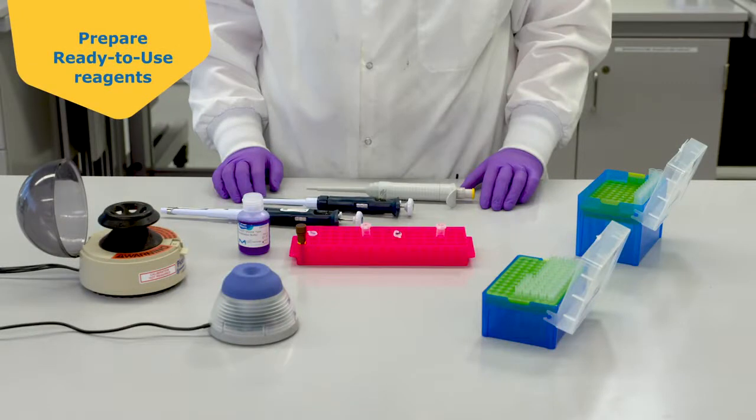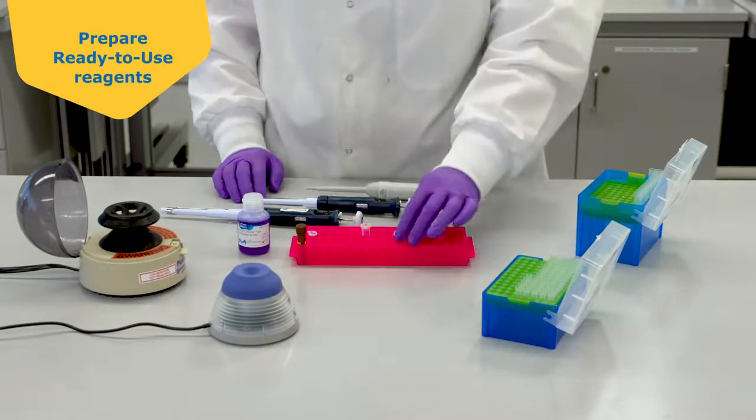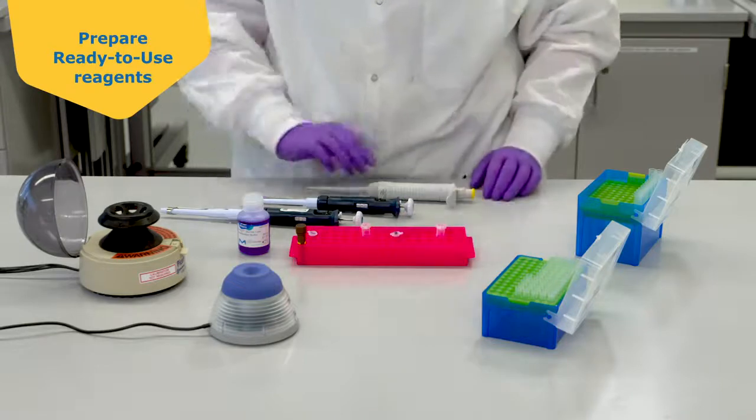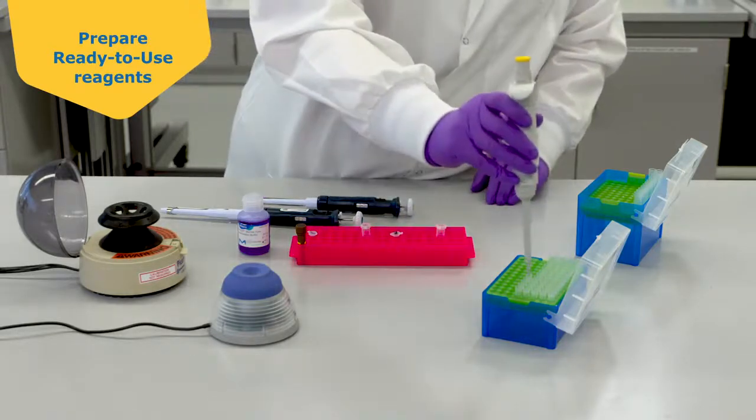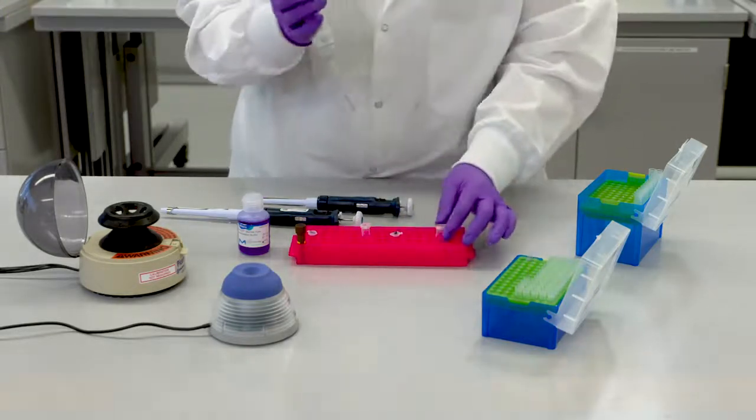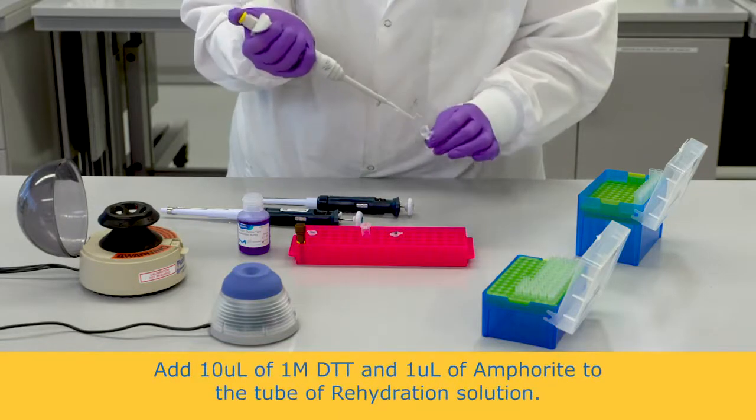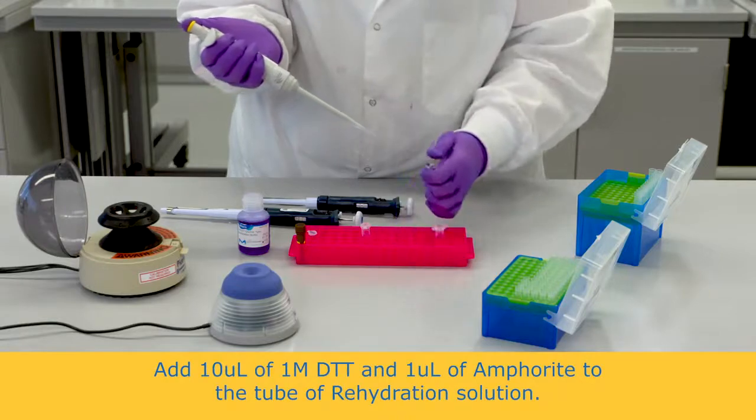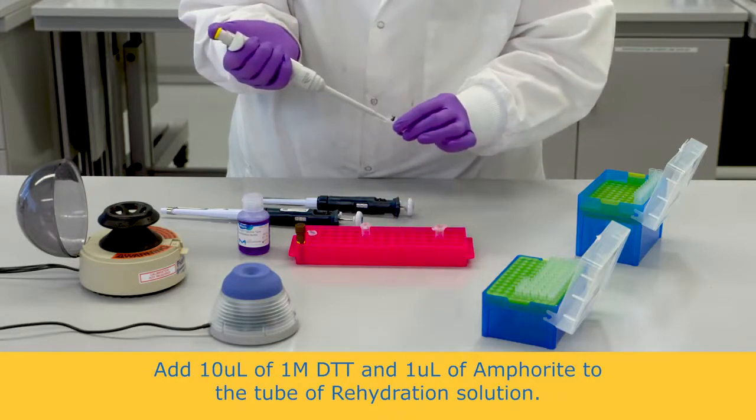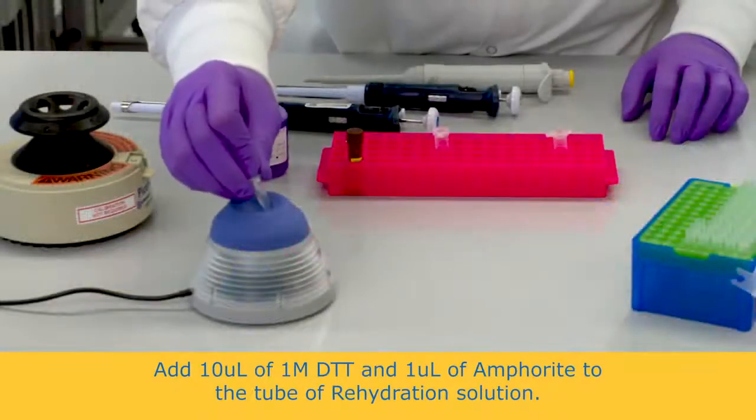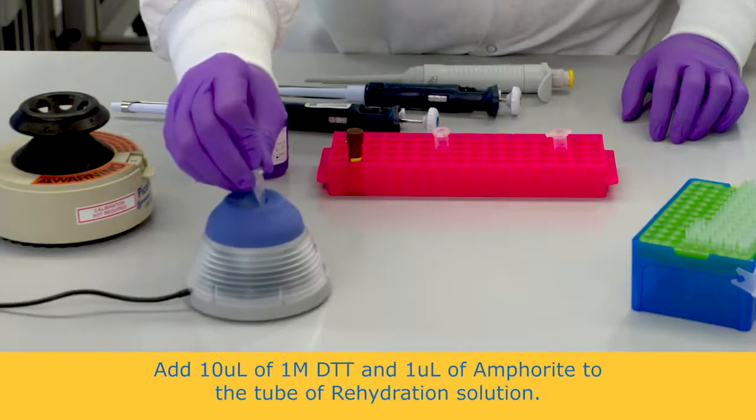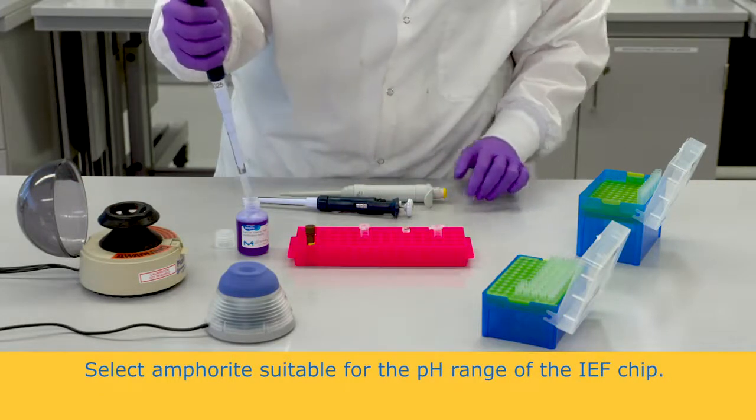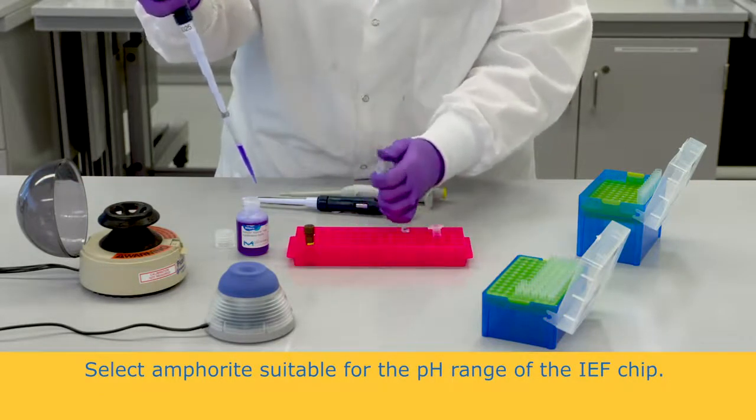Next, prepare the working reagents from the stock solutions supplied in the reagent kit. Take one 189 microliter aliquot of the rehydration solution and add 10 microliters of 1 molar DTT and 1-2 microliters of ampholyte and mix by vortexing. Select an appropriate ampholyte based on the pH range of the IEF chip being used.